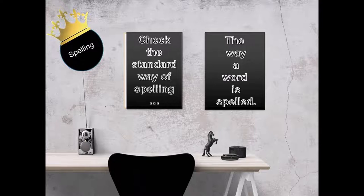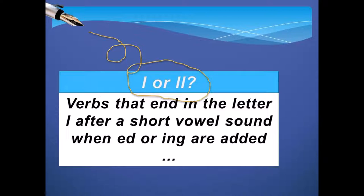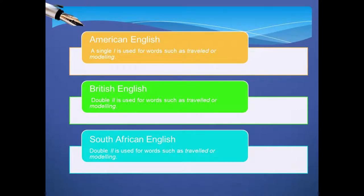Check the standard way of spelling the letter L or the letters LL. Verbs that end in an L after a short vowel sound when -ED or -ING are added: in American English, the single letter L is used in such words as T-R-A-V-E-L-E-D or M-O-D-E-L-I-N-G. In British English and South African English, the letters LL are used for words such as T-R-A-V-E-L-L-E-D or M-O-D-E-L-L-I-N-G.